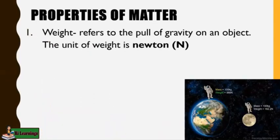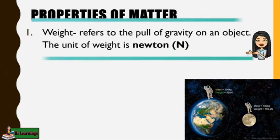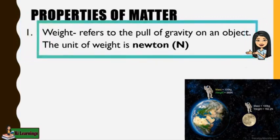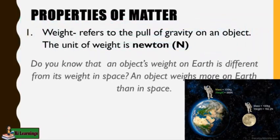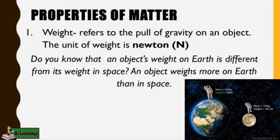Matter has different properties. The first property of matter is weight. Weight refers to the pull of gravity on an object. The unit of weight is Newton. Do you know that an object's weight on Earth is different from its weight in space? An object weighs more on Earth than in space.